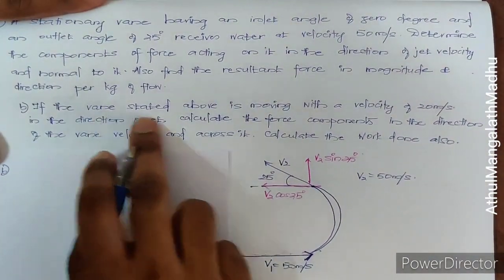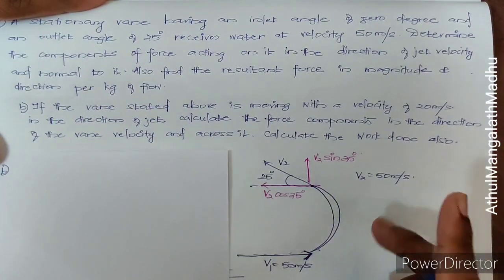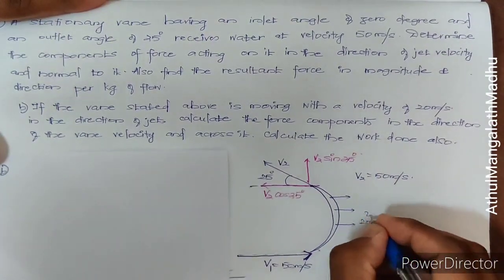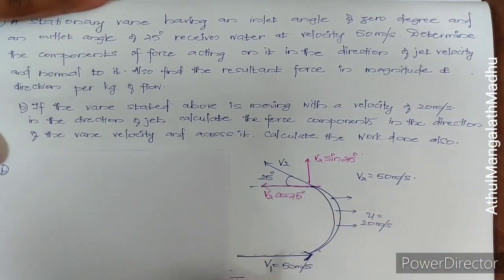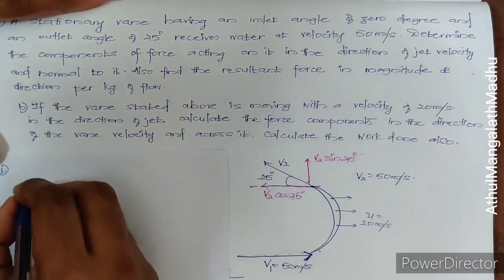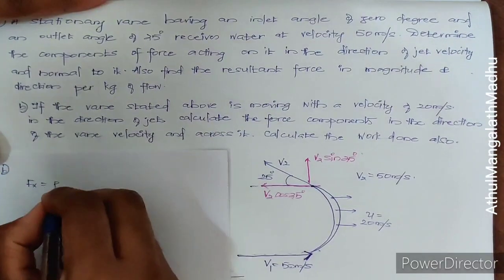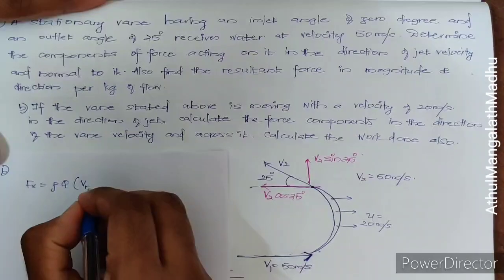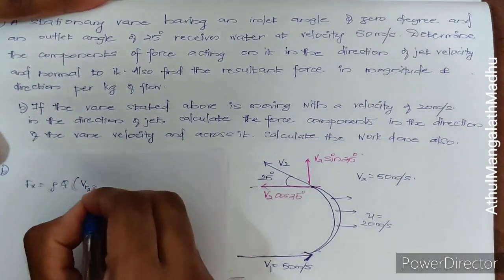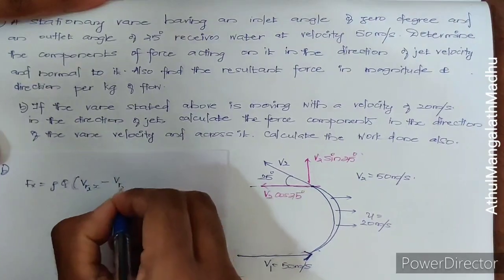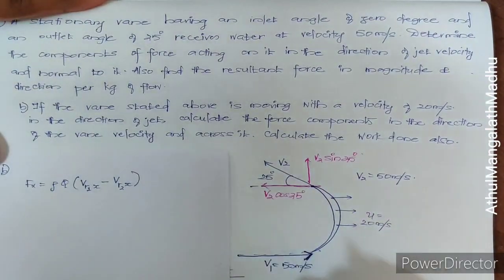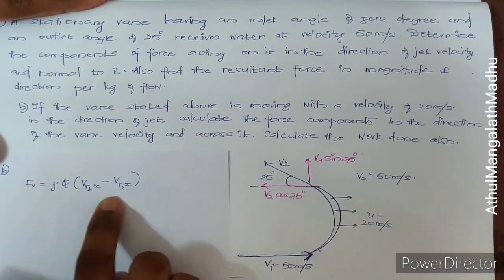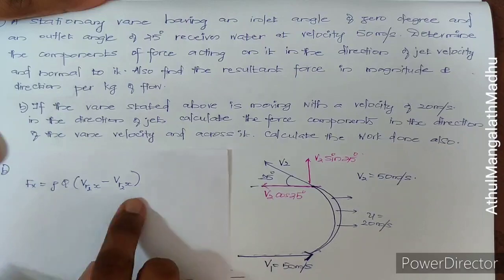Now coming to the second part of the question: what happens when the whole vane is moving with a velocity of 20 meter per second? This is a relative velocity case. The force in x-direction becomes Fx = ρq(Vr1x − Vr2x), where we now use relative velocities instead of absolute velocities.